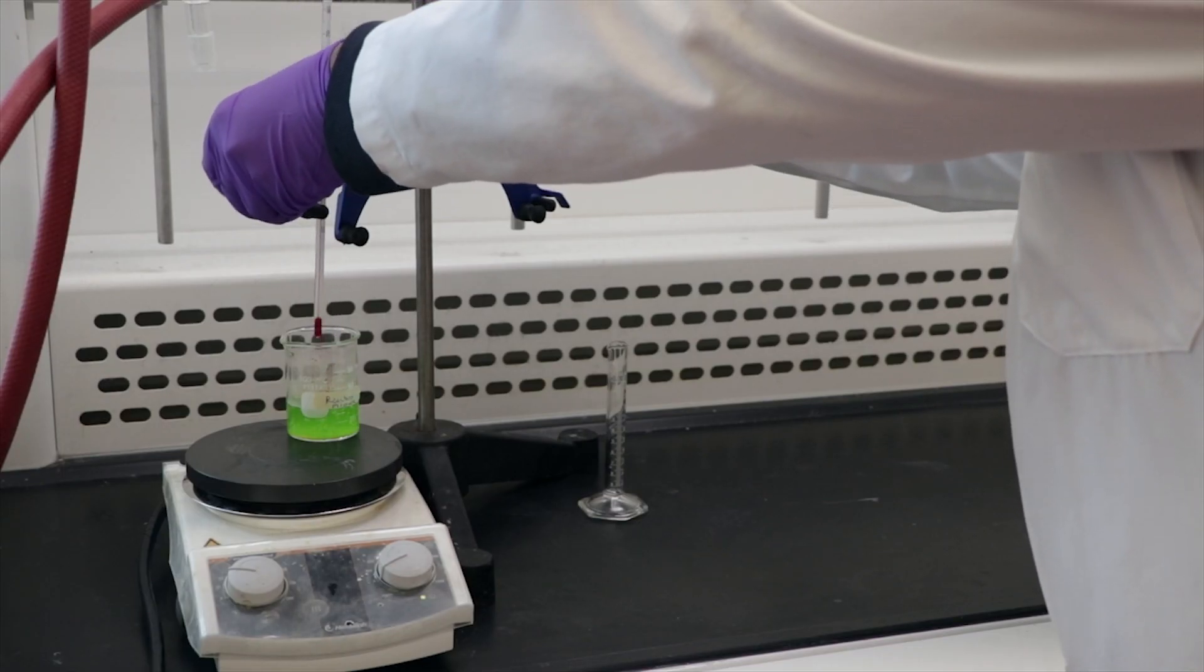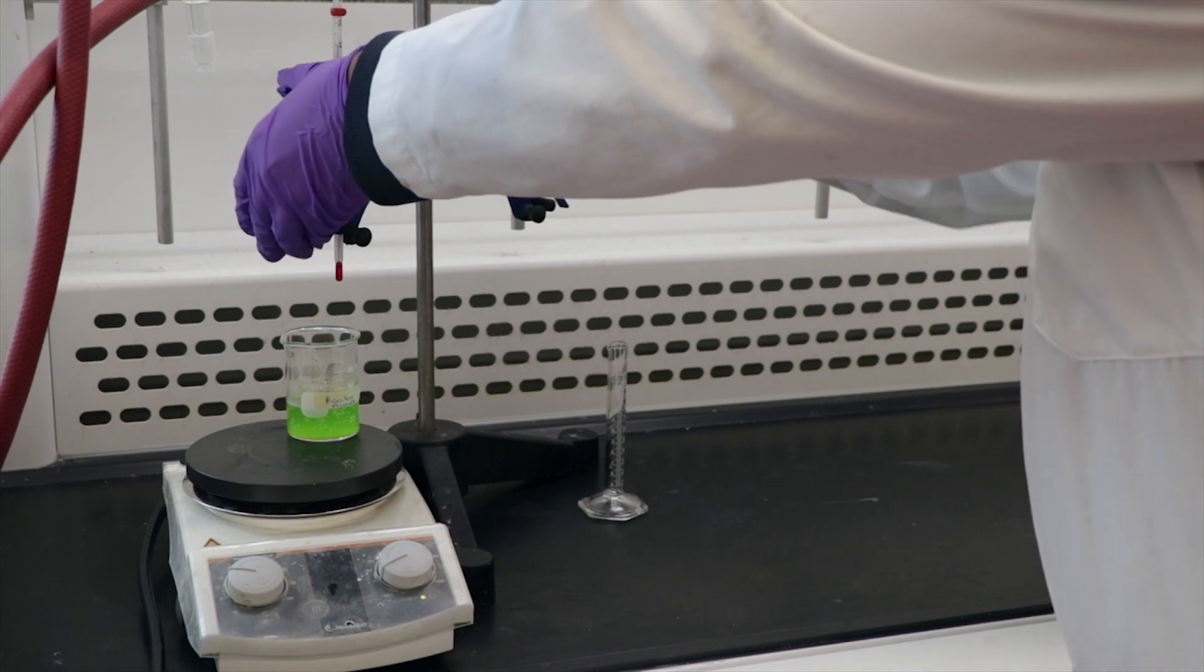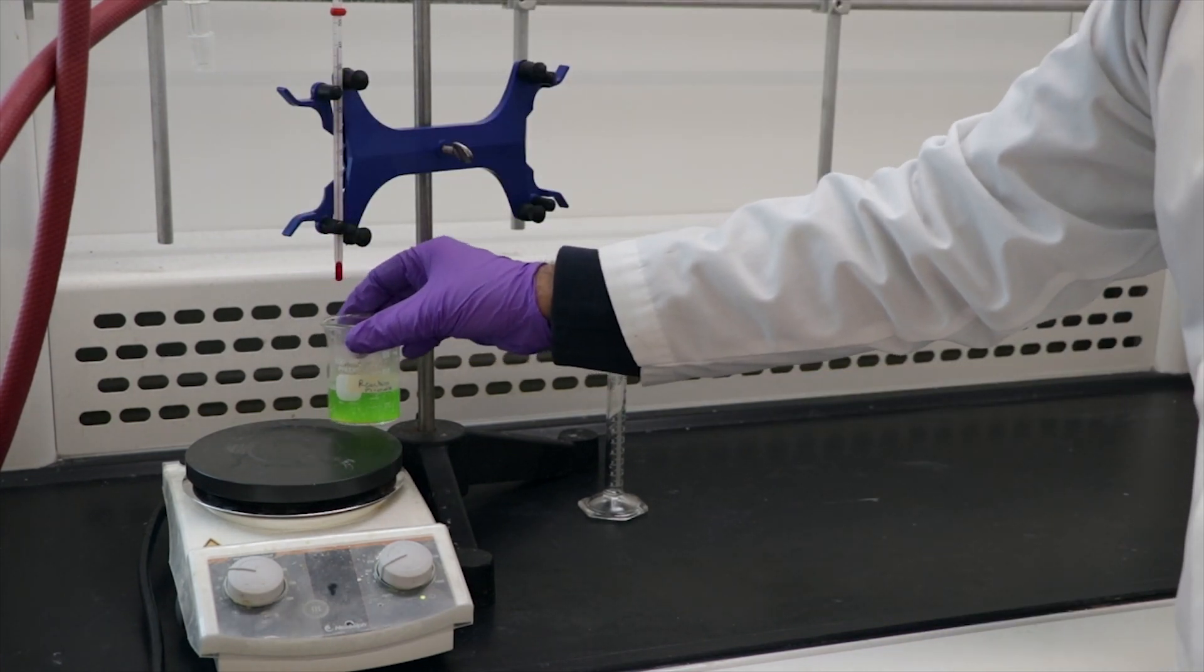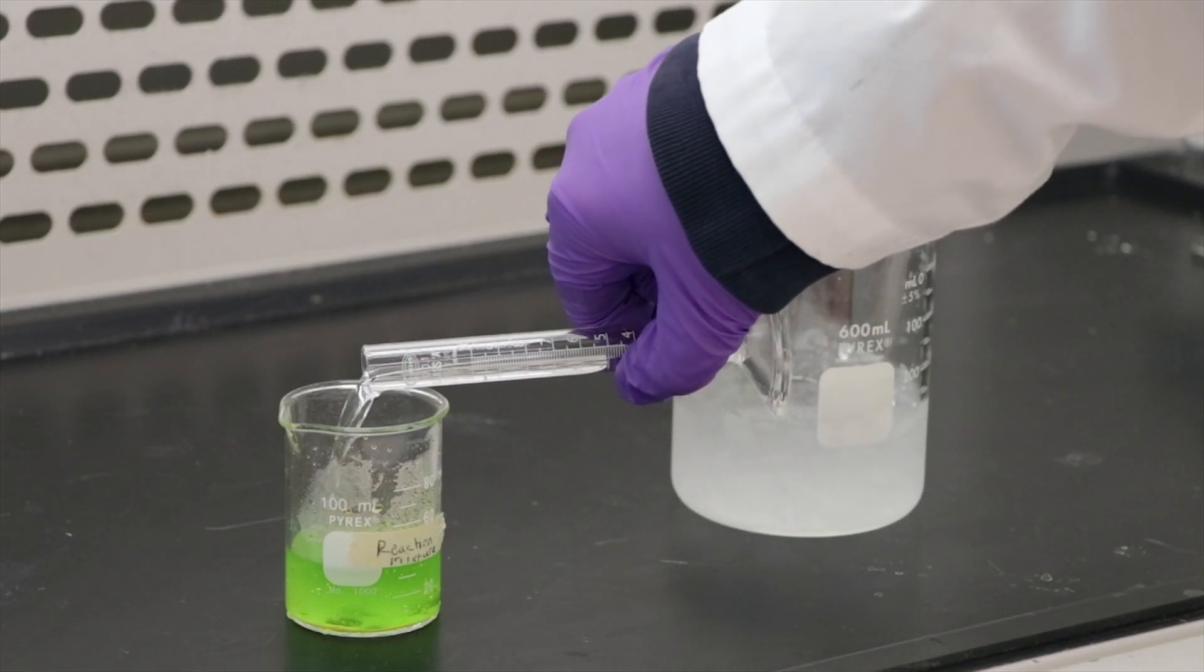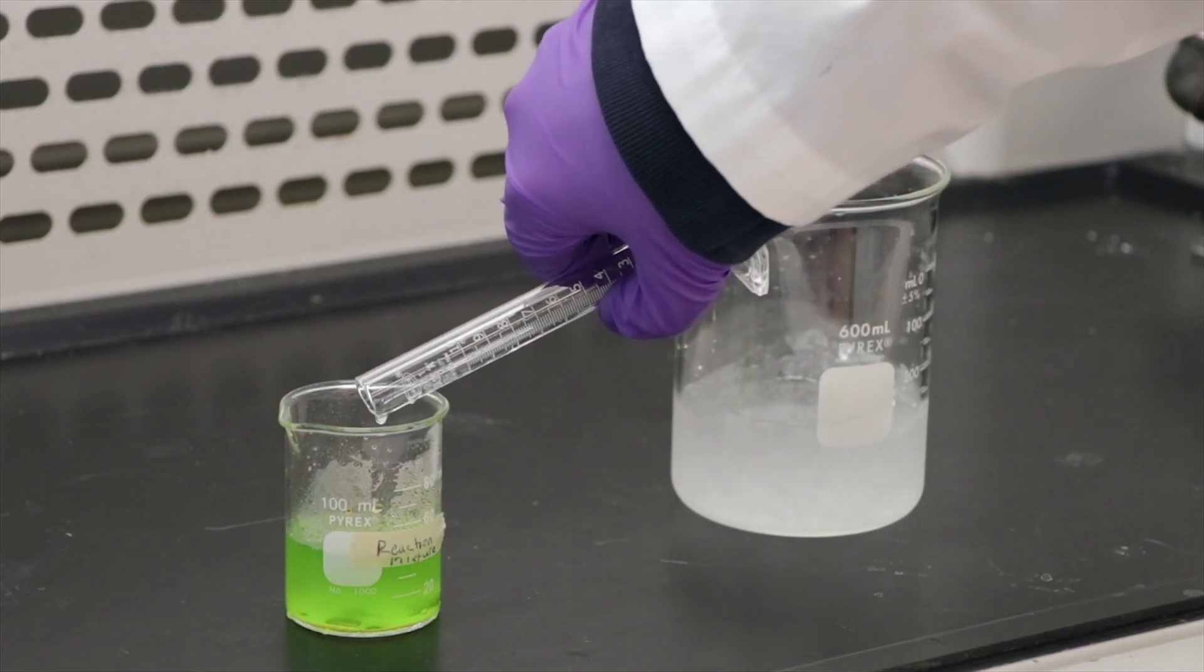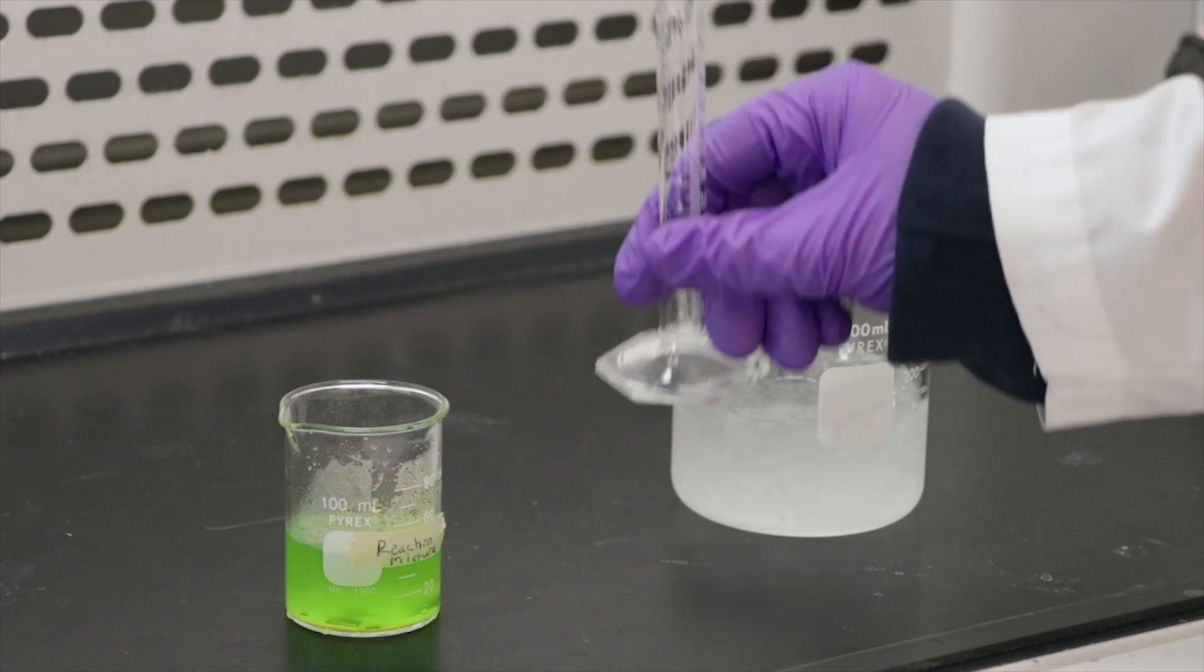Now we are going to crystallize the product. Take the solution off the hot plate and let it cool down to room temperature. Once cooled, add 10 ml of ethanol and place the solution in an ice bath to crystallize your product.